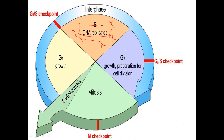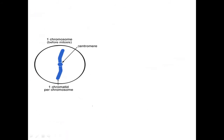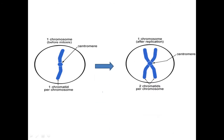After S phase comes G2 phase, where the cell prepares for mitosis, which ultimately leads to cell division and the production of daughter cells. The cell then moves from G2 into mitosis, where it produces new daughter cells. There are four different phases: prophase, metaphase, anaphase, and telophase. After undergoing all these phases, the cell undergoes cytokinesis to produce daughter cells with identical DNA. Before going into mitosis, cells contain chromosomes with two chromatids.